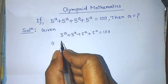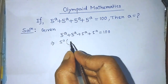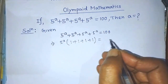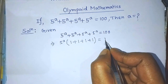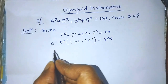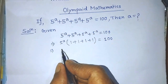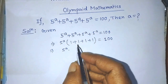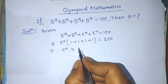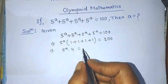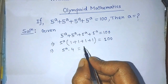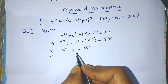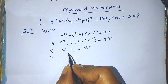So now we can write: 5 to the power A times (1 plus 1 plus 1 plus 1) is equal to 100 on the right hand side. To find the value of A from this equation, we have to transpose the digit 4 from the left hand side to the right hand side.